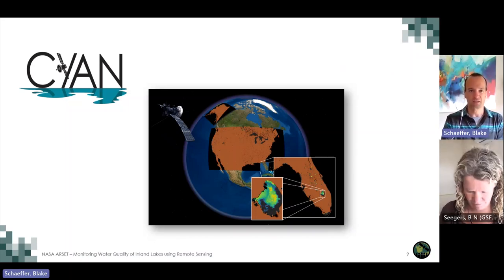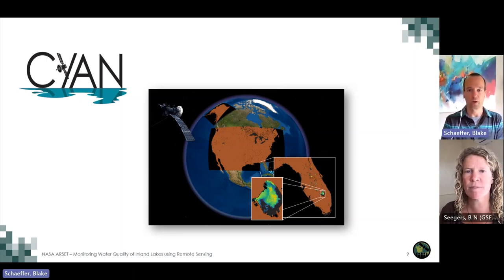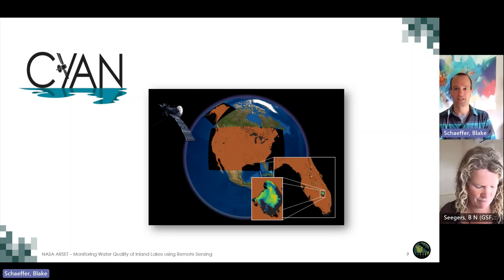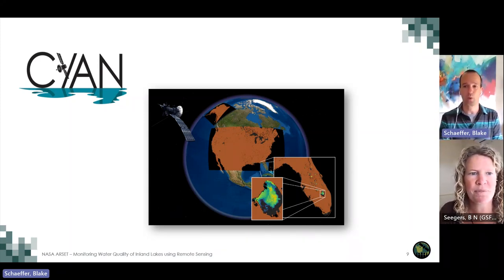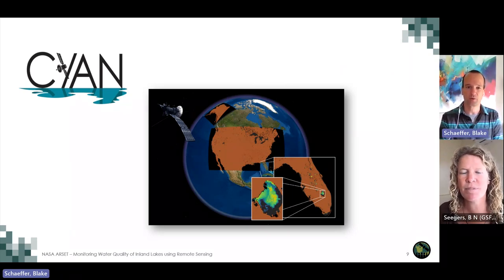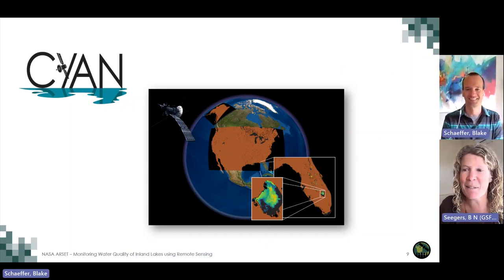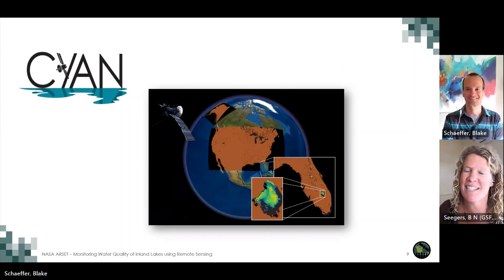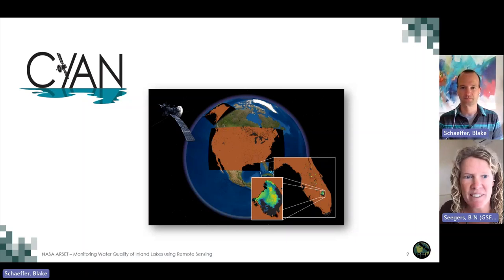Basically, every day a satellite called Sentinel-3 uses the ocean and land color instrument to detect and help people monitor where and when cyanohabs are occurring in these 2,200 systems. In less than 24 hours, you can access satellite data and see where and when cyanohabs are occurring across the largest U.S. lakes. The Cyanobacteria Assessment Network has put the power of satellite technology right in the hands of the public. Satellites can do this by measuring the changes in spectral color of the lake water — remember Roy G. Biv, all those colors in the rainbow?